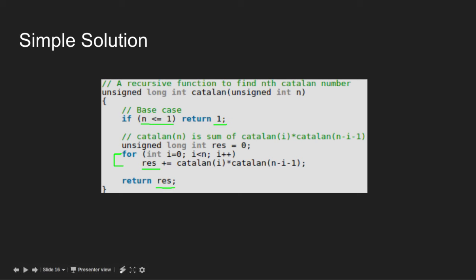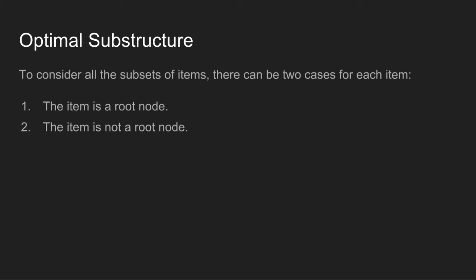We should notice here that Catalan of i is selected from first i numbers, and Catalan of n-i-1 is selected from remaining numbers. To consider all the subsets of items there can be 2 cases for each item: the item is a root node, or the item is not a root node.